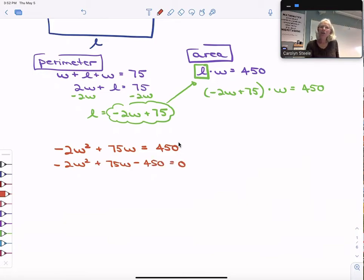And then the next thing I'm going to do, it's always so much easier if my A value is a positive number. So I'm going to multiply both sides by negative 1. And that's going to switch the sign of all of my terms. So negative 2W squared times negative 1 will give me positive 2W squared minus 75W plus 450 equals zero.